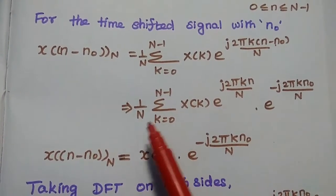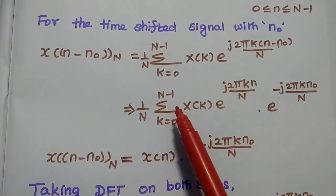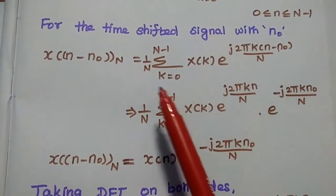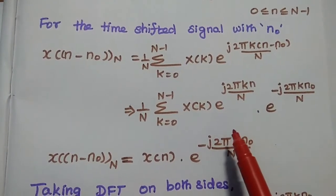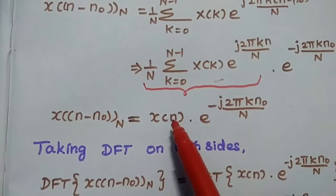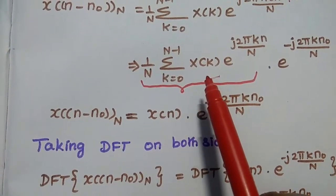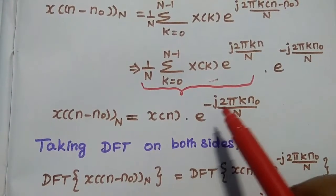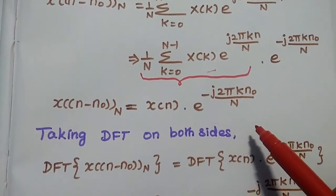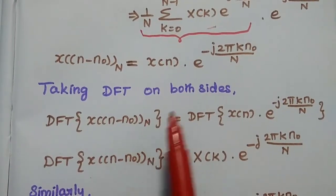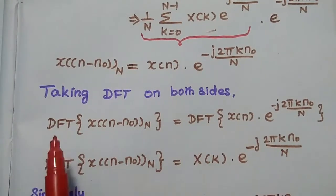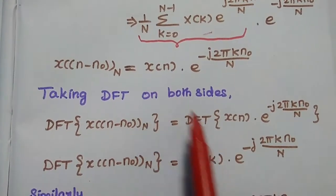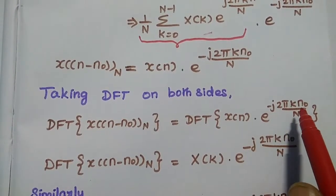From this expression, the term (1/N) summation k=0 to N−1 of X(k) × e^(j2πkn/N) looks like an inverse discrete Fourier transform. We can replace this term as x(n) — it is the IDFT formula. So the expression becomes x(n) × e^(−j2πkn₀/N). Now we take the DFT on both sides: DFT of x((n−n₀) mod N) equals DFT of x(n) × e^(−j2πkn₀/N).